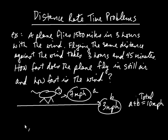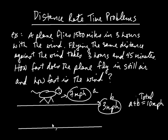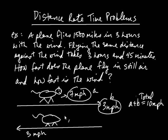Now imagine a similar situation. Once again it's a moving sidewalk, but now the moving sidewalk is going that way at three miles per hour. And once again we have our little cat, and the cat's still going this way at seven miles per hour.